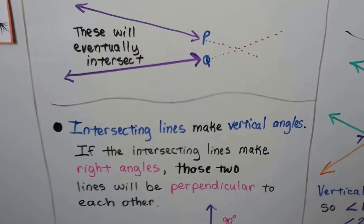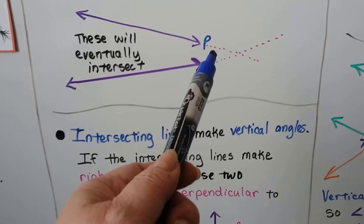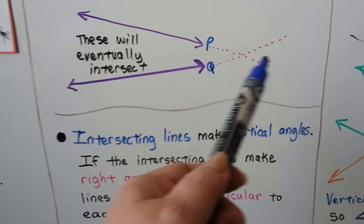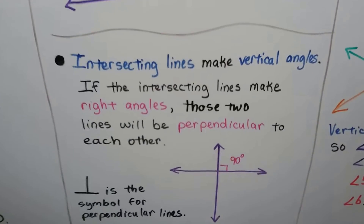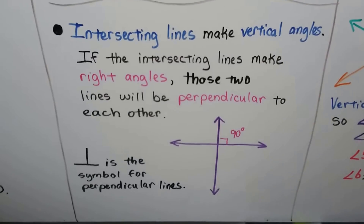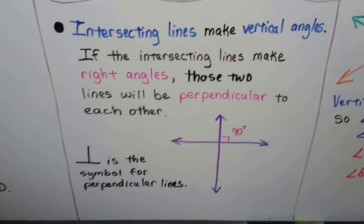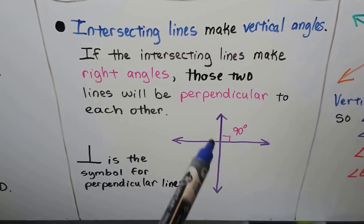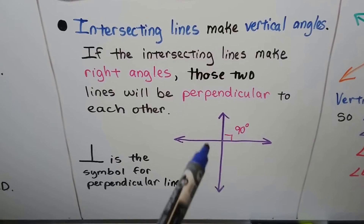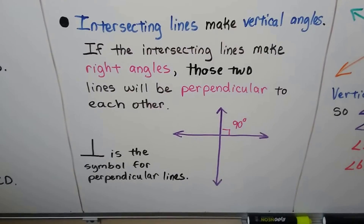Intersecting lines make vertical angles. So if they did continue, this angle would be vertical to that one and they'd be the same measure. If the intersecting lines make right angles — with a little box for 90 degrees — those two lines will be perpendicular to each other. All the angles will be 90 degrees. And when you see this upside-down T, it's the symbol for perpendicular lines.